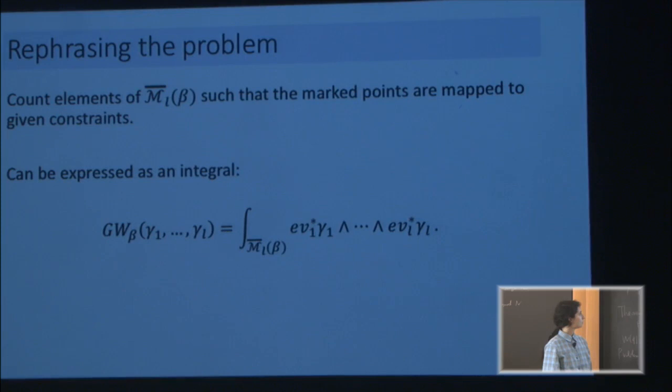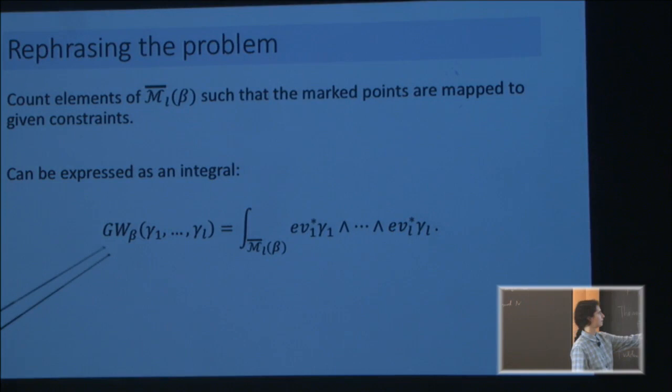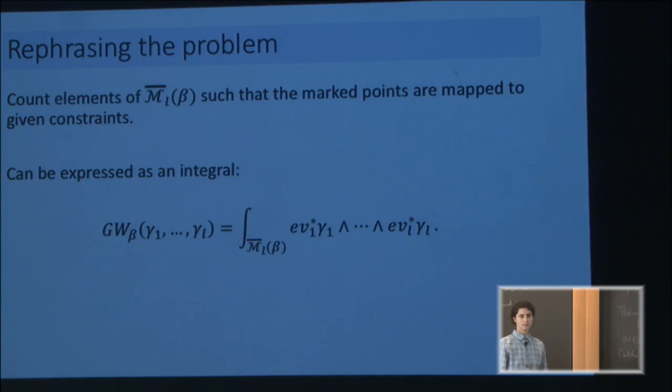So gamma is where I want the marked points to map to — those are the constraints. For example, it could be a divisor where I want the second marked point to map to, so there's some codimension to these. Gamma one is some submanifold of the range where I want the first marked point to map into.